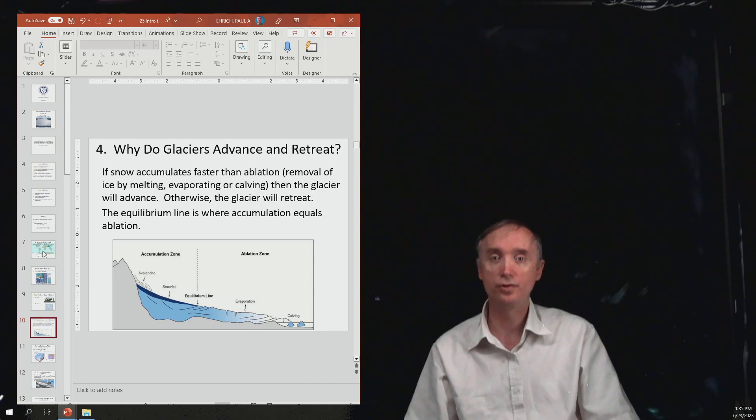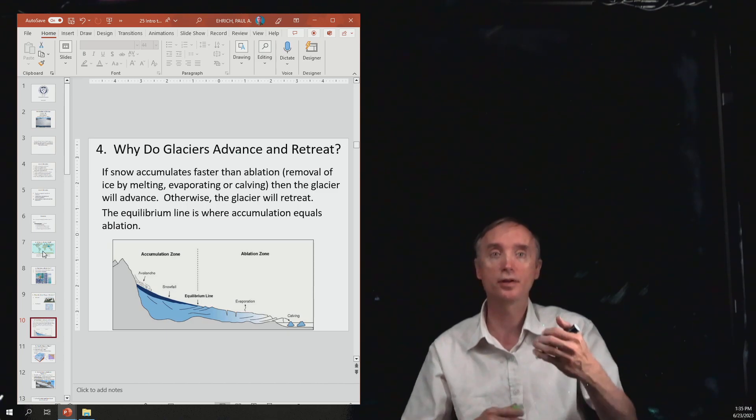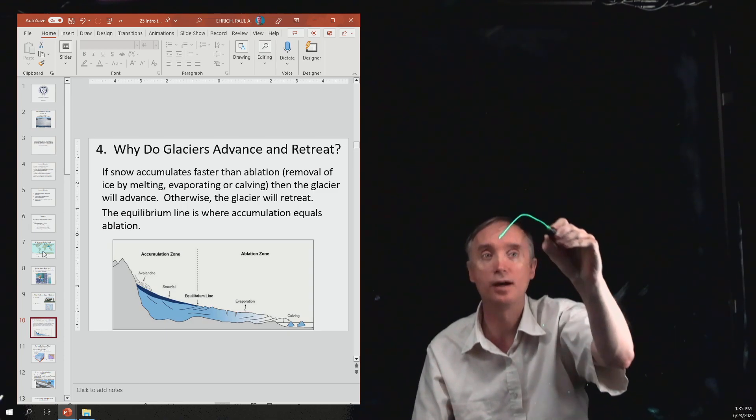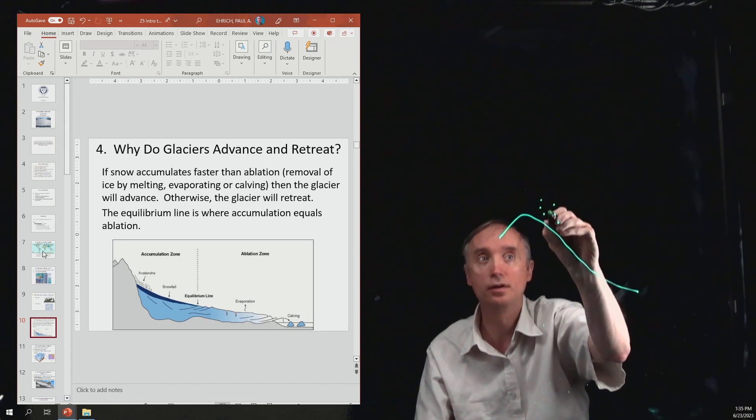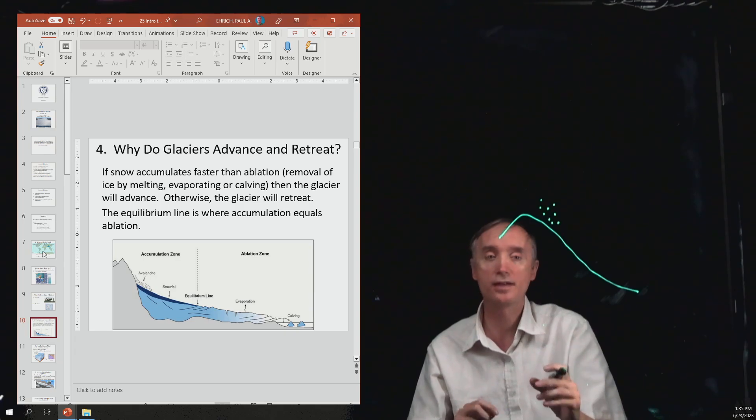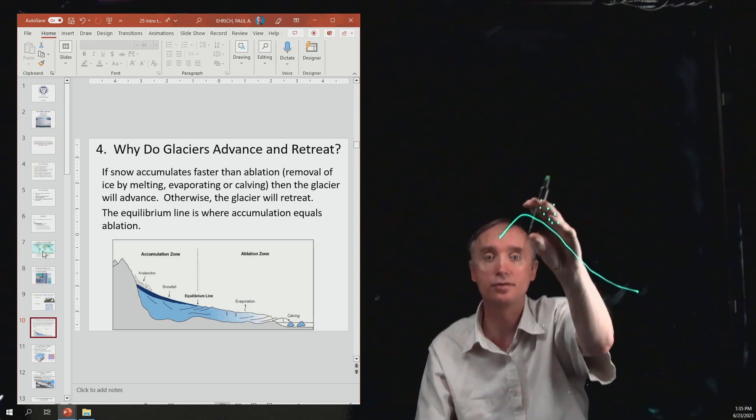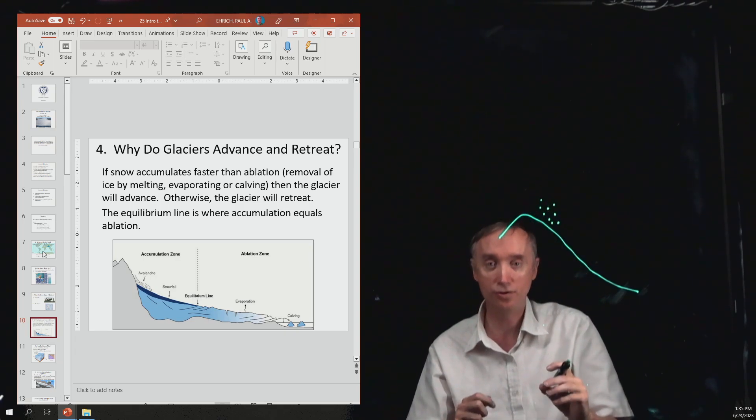Why do glaciers advance and why do they retreat? Let's draw a picture here of a mountain. And let's say that it is snowing up here. So that's going to be this area up here, the zone of accumulation.